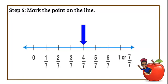Starting from 0, so we have 1 seventh, 2 sevenths, 3 sevenths, 4 sevenths which we would plot.